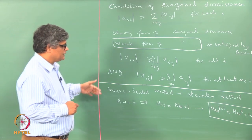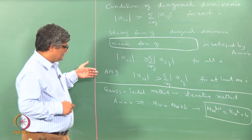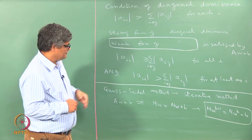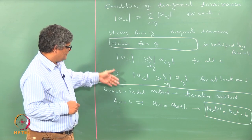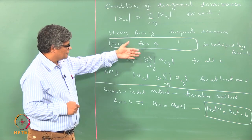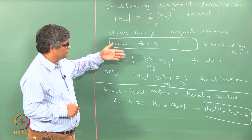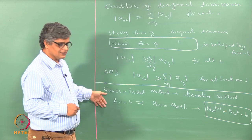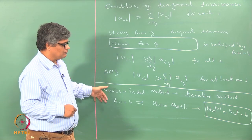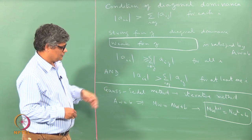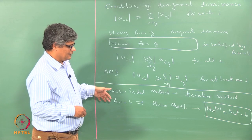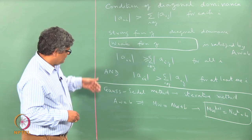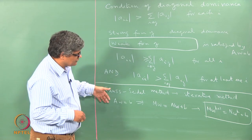Right now, we take it for granted that this is a method we can use to solve these equations. Since our coefficient matrix A satisfies the weak form of diagonal dominance, the Gauss-Seidel method would be a good method for the solution of these equations.